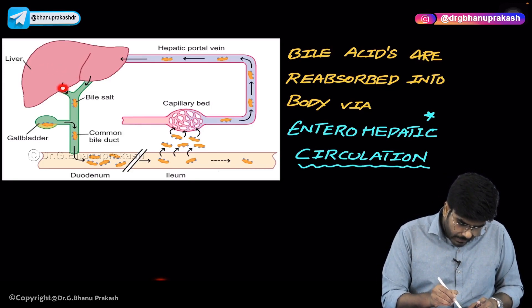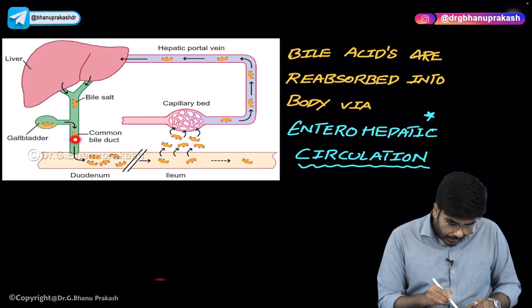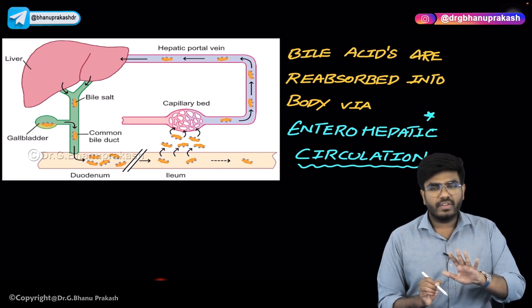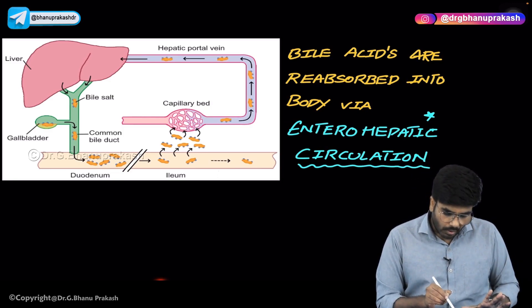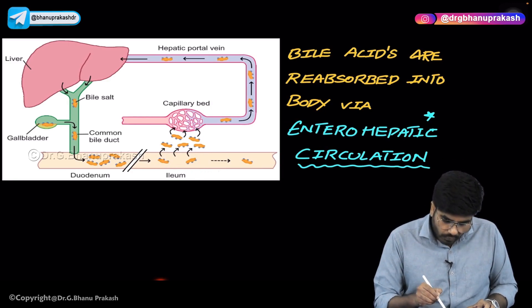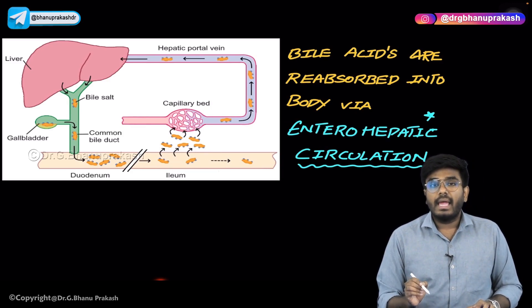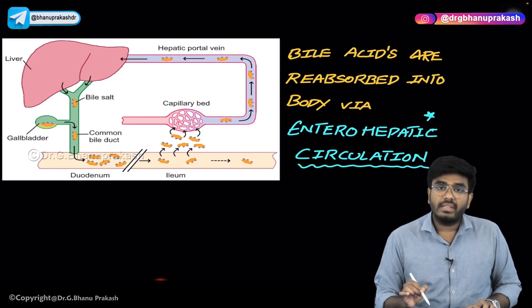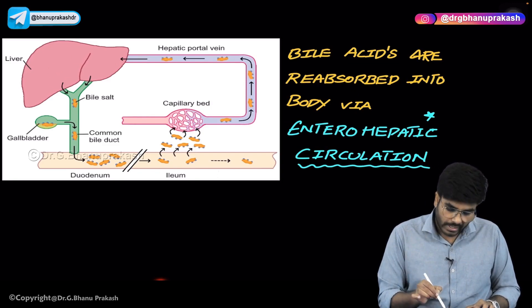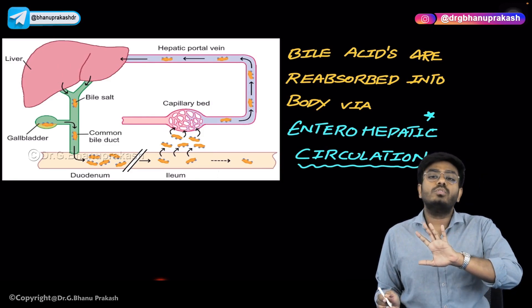The bile comes from the liver, is stored in the gallbladder, and then comes into the duodenum. In the duodenum, the bile acids help in the process of emulsification and lipid digestion. These bile acids are very important substances. Whenever they reach the ileum, these bile acids are reabsorbed back into the enteric circulation — this is known as enterohepatic circulation. The bile acids are taken back to the liver, so normally you are not losing any bile acids.